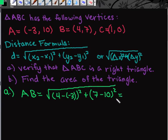If we simplify this, we have 7 squared, which is positive 49, and negative 3 squared, which is positive 9.